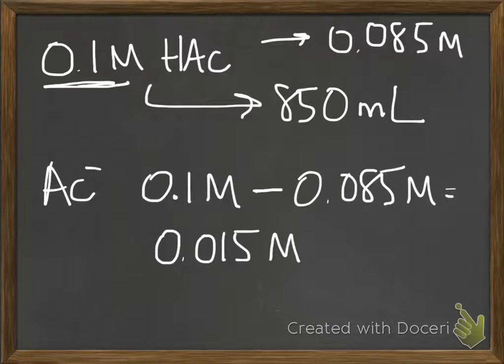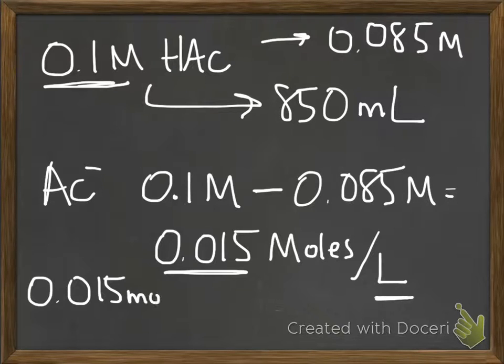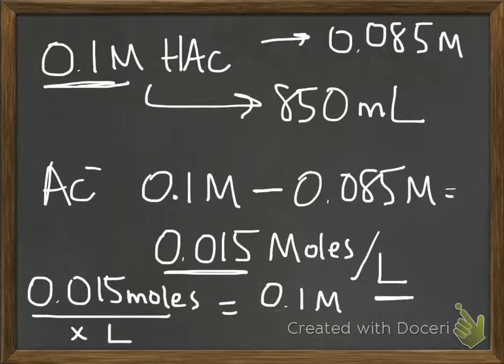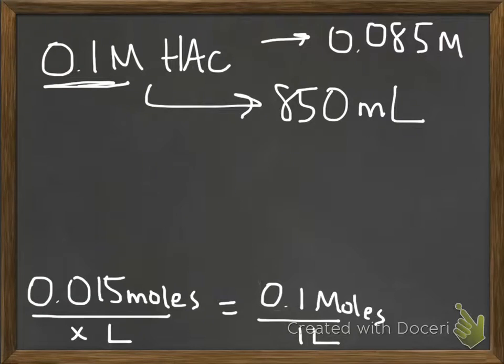So if 0.015 moles per liter, and we want to know what volume we need to use to add 0.015 moles. So if 0.015 moles are in our solution, and we start it off with 0.1 molar solution, you get x equals 0.015 liters or 150 mils.